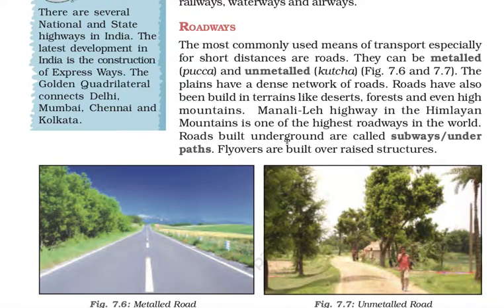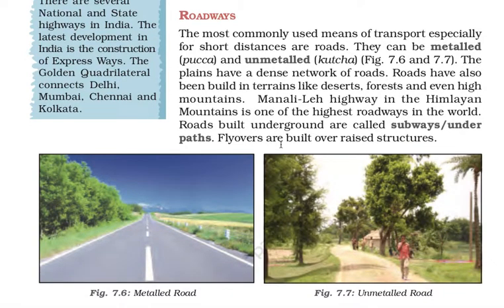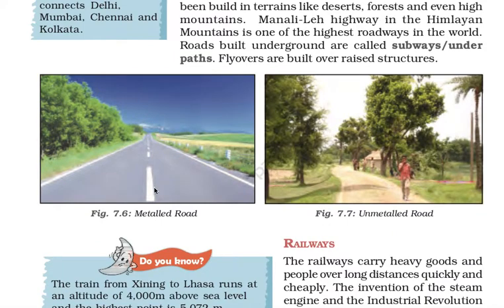Many exam questions can be formed about roadways, such as which is the biggest road network. Roads built underground are called subways or underpasses. Flyovers are structures built over roads — roads below the ground are called subways or underpasses, and elevated bridges are called flyovers.